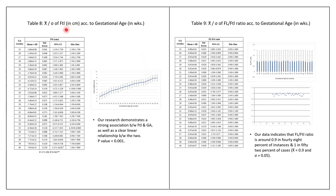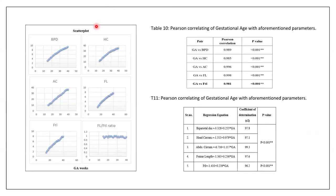Regarding fetal foot length, our research demonstrates a strong association between fetal foot length and gestational age, with a clear linear relationship between the two with p-value less than 0.001. The femur length to foot length ratio was also calculated. It was observed that the femur length to foot length ratio is around 0.9 in 48% of cases and 1 in 52% of cases. Scatter plots depict a linear relationship for all parameters, and the femur length to foot length ratio stored a constant value between 0.9 to 1.1.